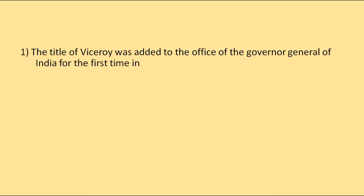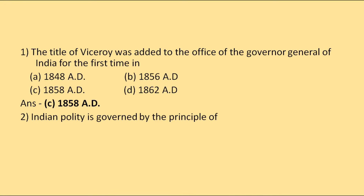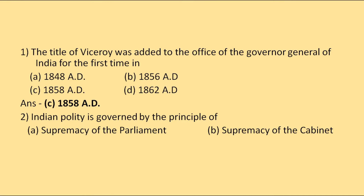The correct option will be 1858 AD. After the Sepoy Mutiny of 1857, the post of Governor General of India was replaced by Viceroy. Next, Indian Polity is governed by the principle of: supremacy of the Parliament, supremacy of the Cabinet, supremacy of law and Constitution, or judicial supremacy?